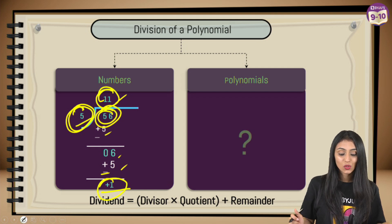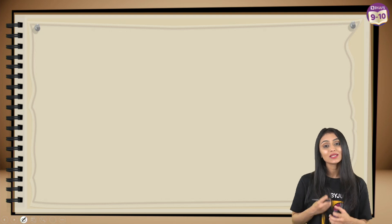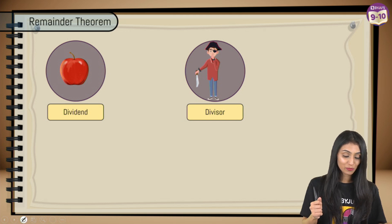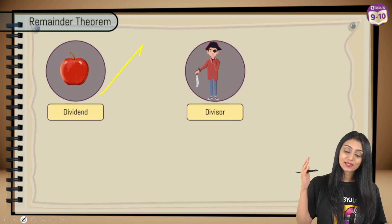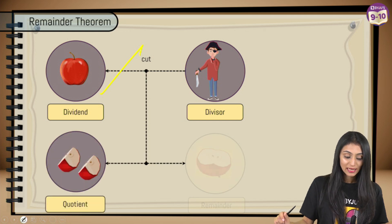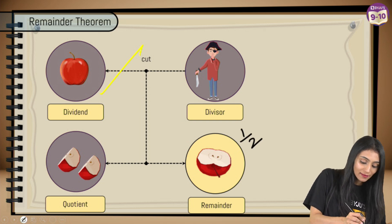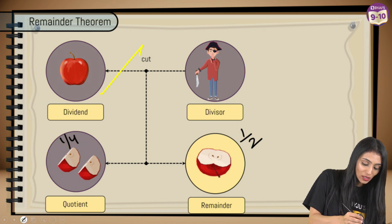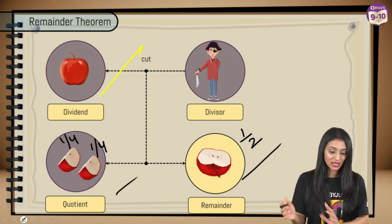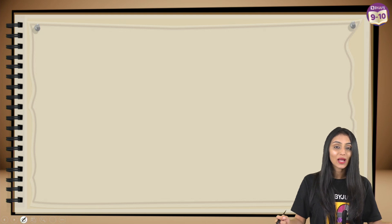Let's quickly recall how we divide polynomials using an animated story. The divisor depicts a person with a knife who cuts an apple, and the dividend depicts the apple. The quotient is the part of the apple that is fully cut, and the remainder is the remaining part. Each part here is 1/4 and 1/4, making 1/2, and all parts together make the whole apple.